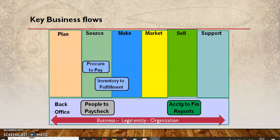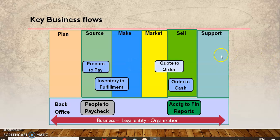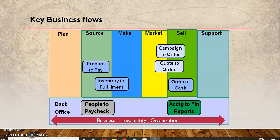Inventory to fulfillment is another business process. Once you have inventory, you start selling the goods. Quote to order is where you provide quotations to the customer and they give you orders to be processed. Once the order comes, there is a business process called order to cash, where your receivables — the money you get from the customer — come in. You also have campaigns such as roadshows and advertisements, so campaign to order is on the receivable, market-and-sell side.